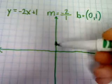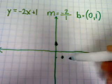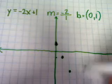Since we have a negative number here, we're going to go down 2 and over 1. We always go to the right, just like you read from left to right.